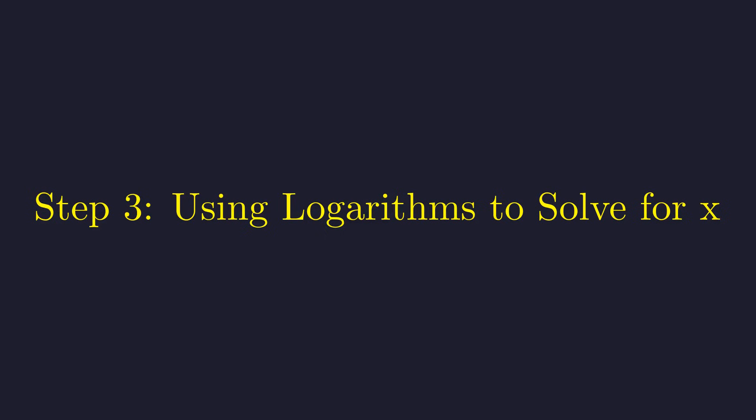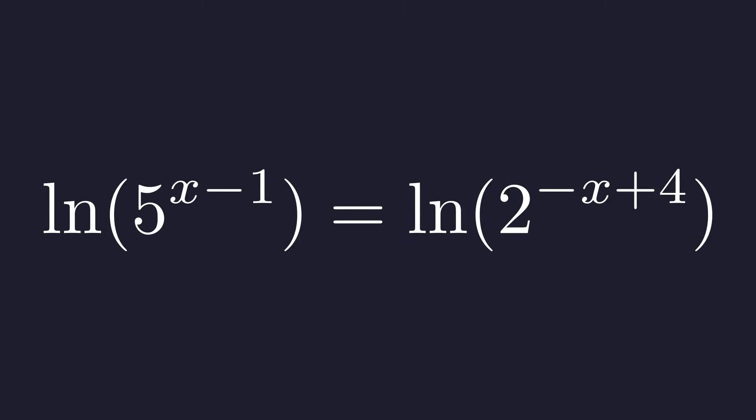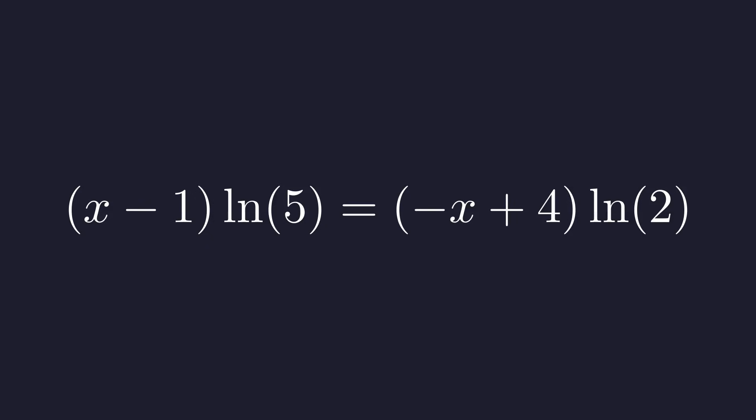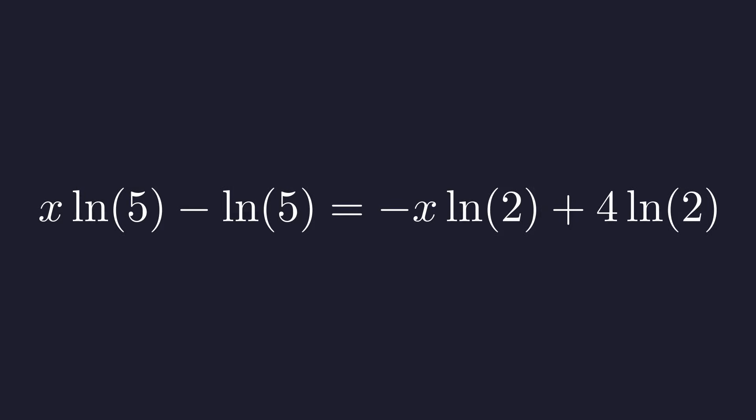Now that the equation is simplified as much as possible, we can use logarithms to solve for x. We take the natural logarithm of both sides. Using the power rule of logarithms, the exponents come down as multipliers. We distribute the logarithmic terms on both sides.